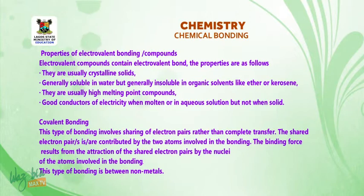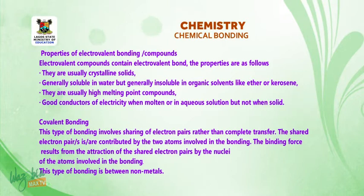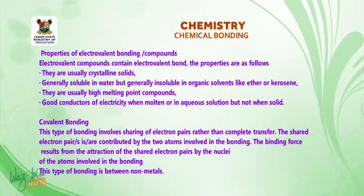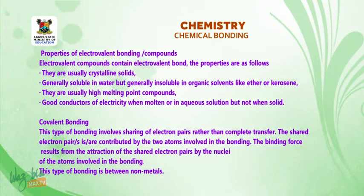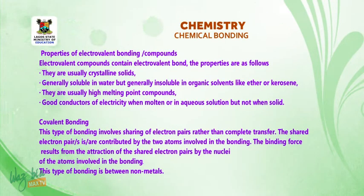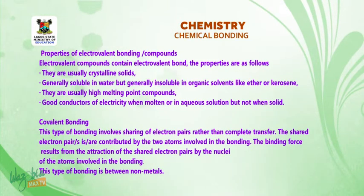Properties of electrovalent compounds. Electrovalent compounds contain electrovalent bonds. The properties are as follows: they are usually crystalline solids; generally soluble in water, but generally insoluble in organic solvents like ethers or kerosene; they usually have high melting points; and they are good conductors of electricity when molten or in aqueous solution, but not when solid.